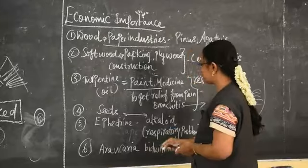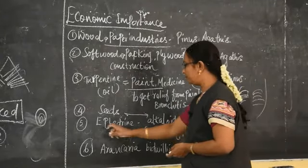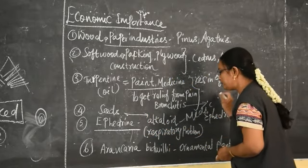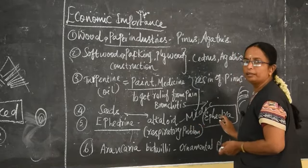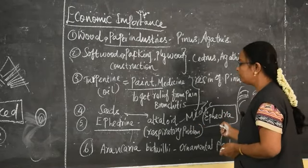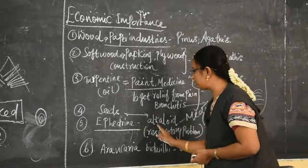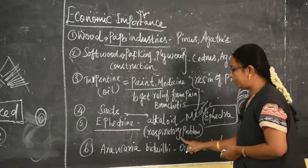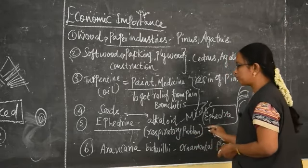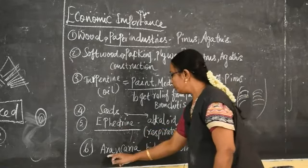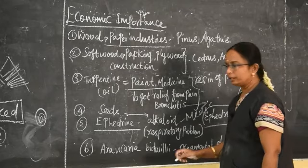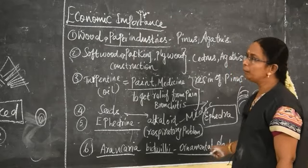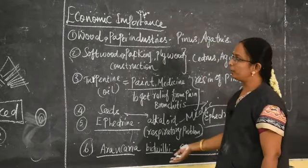Some seeds of Gymnosperms are also edible. Ephedrine is an alkaloid medicine extracted from Ephedra, a Gymnosperm plant. It is used for respiratory problems and tuberculosis. Araucaria bidwillii is one of the Gymnosperm plants used as an ornamental plant. So these are all about the economic importance of Gymnosperms.